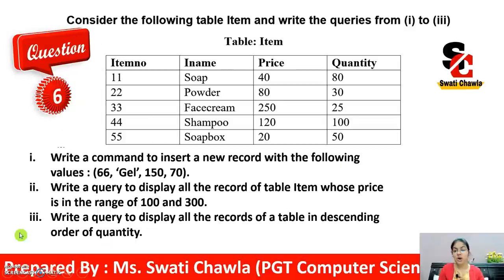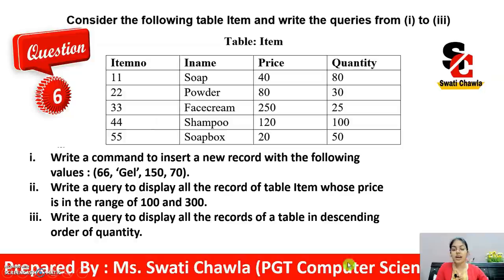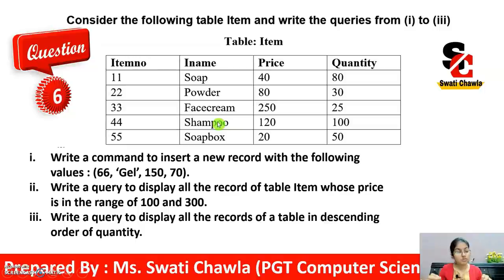Now consider the following table 'item' with columns item_number, item_name, price, and quantity, with some records given. Based upon this, we have to write 4 queries. To make everything crystal clear, I have created this table in OpenOffice Base so that I can show you this practically as well.